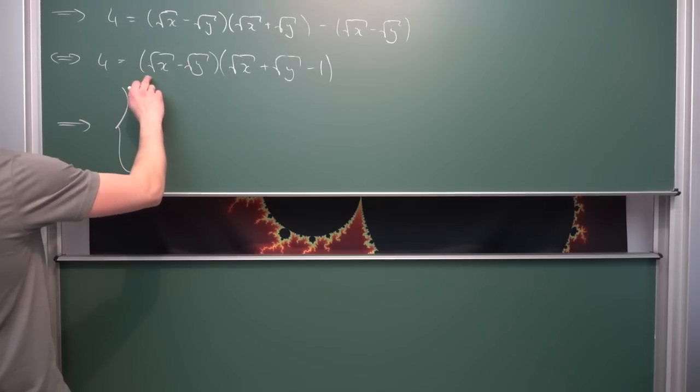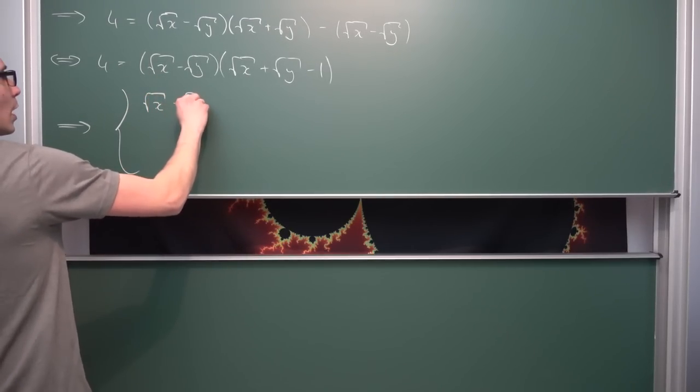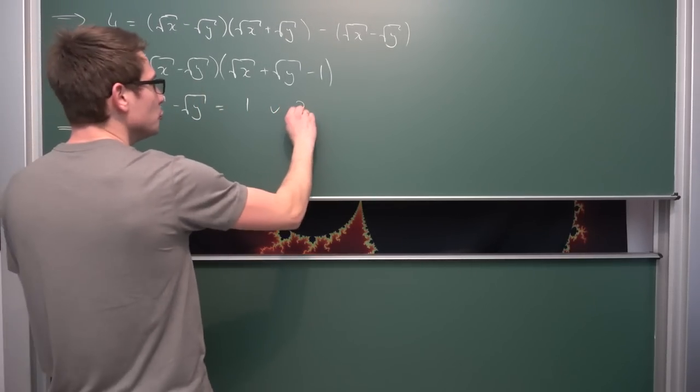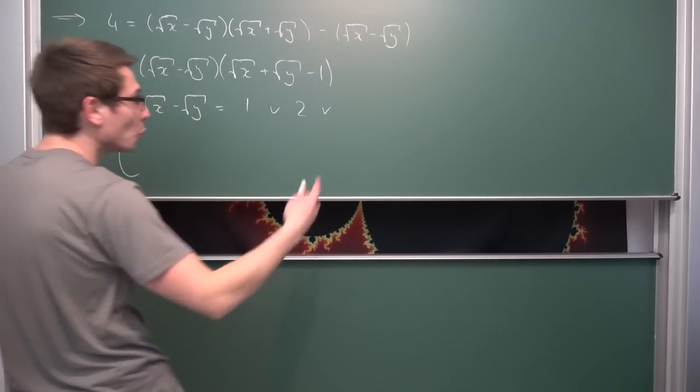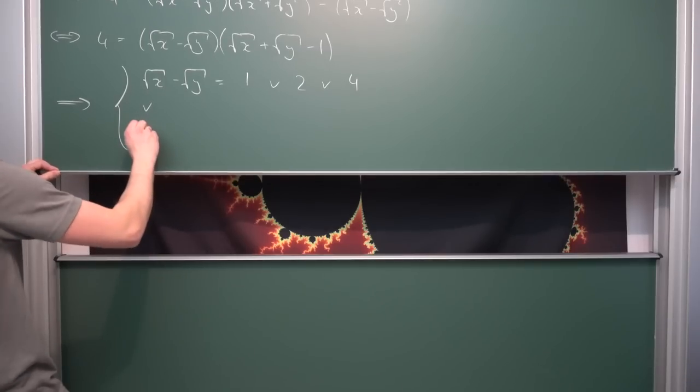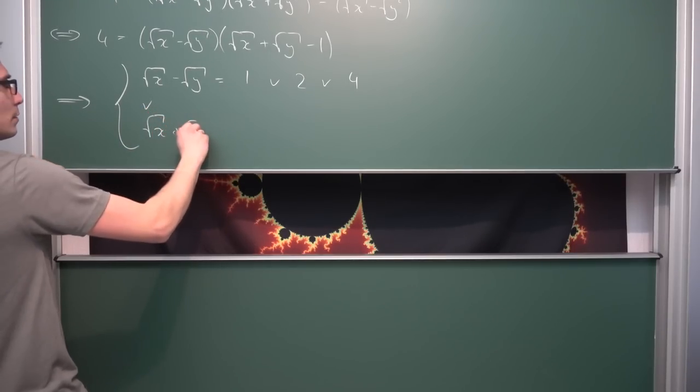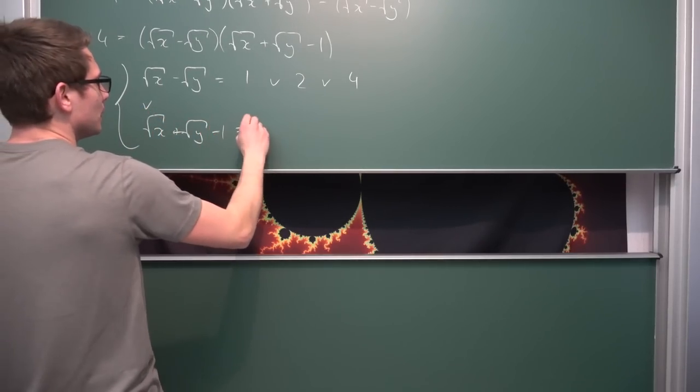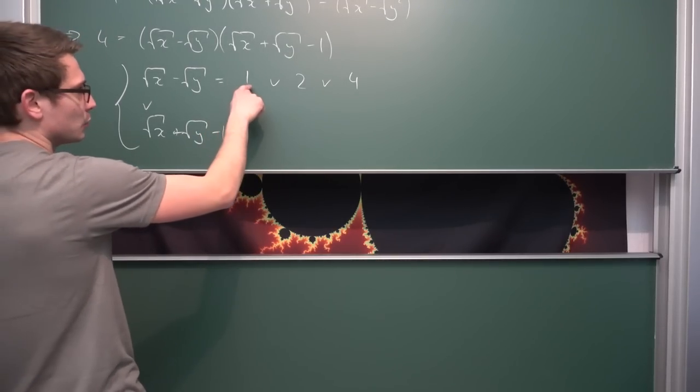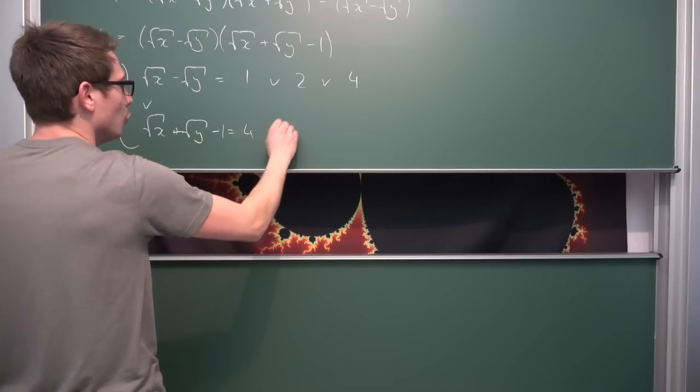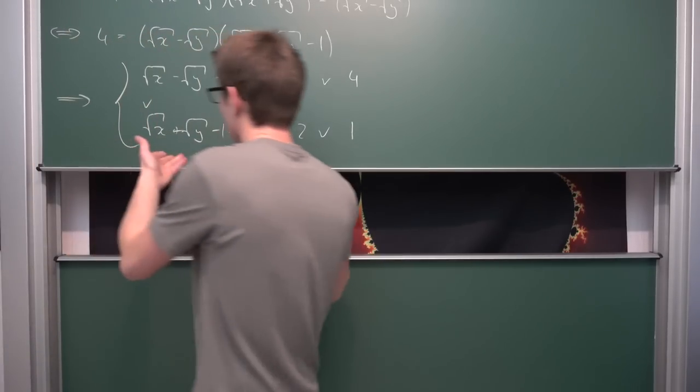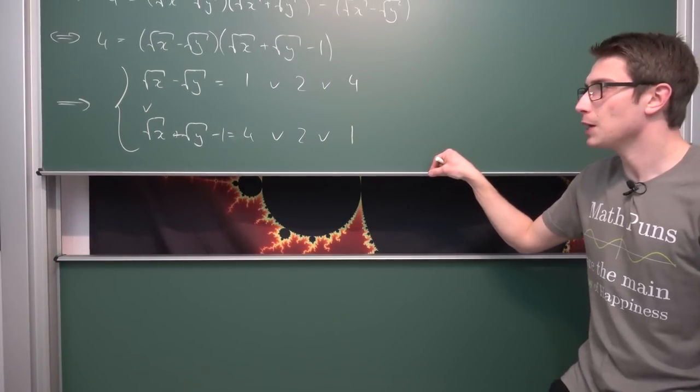Let's do case work. We get that square root of x minus square root of y is equal to either one, or two for the prime factorization, or four. We can have it the other way around - square root of x plus square root of y minus one. If the first part equals one, this must equal four; if it equals two, this must equal two; or if it equals four, the first part must equal one. These are the cases we have right now.